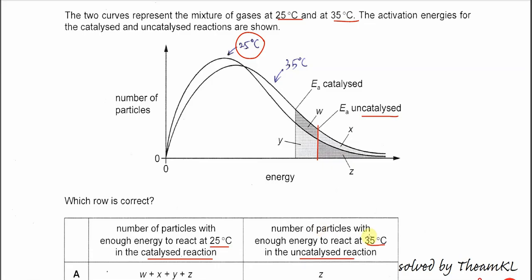And it's 35 degrees C. So 35 degrees C means this curve, the one to the right and lower. The number of particles with enough energy to react will be X plus Z here.